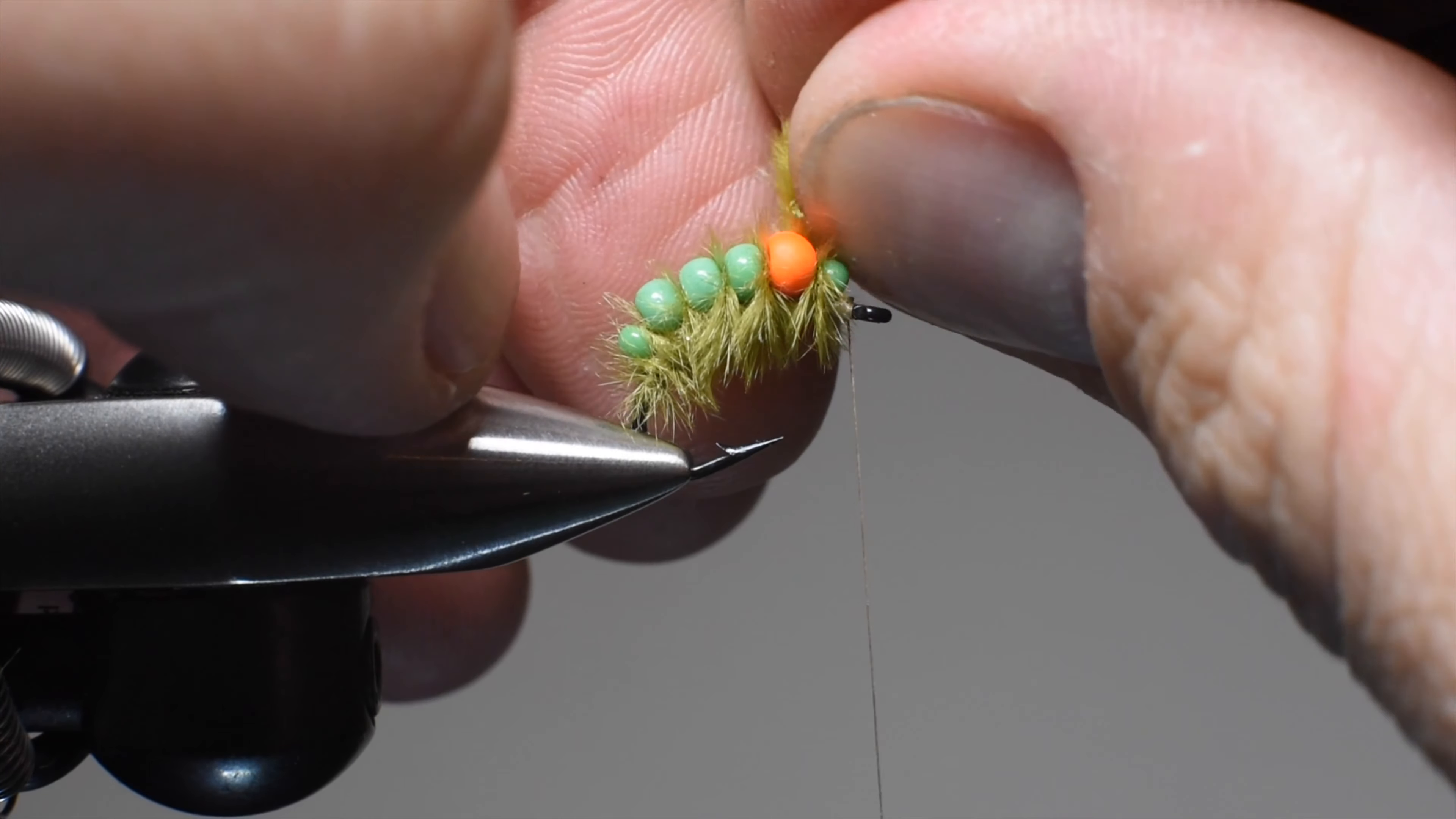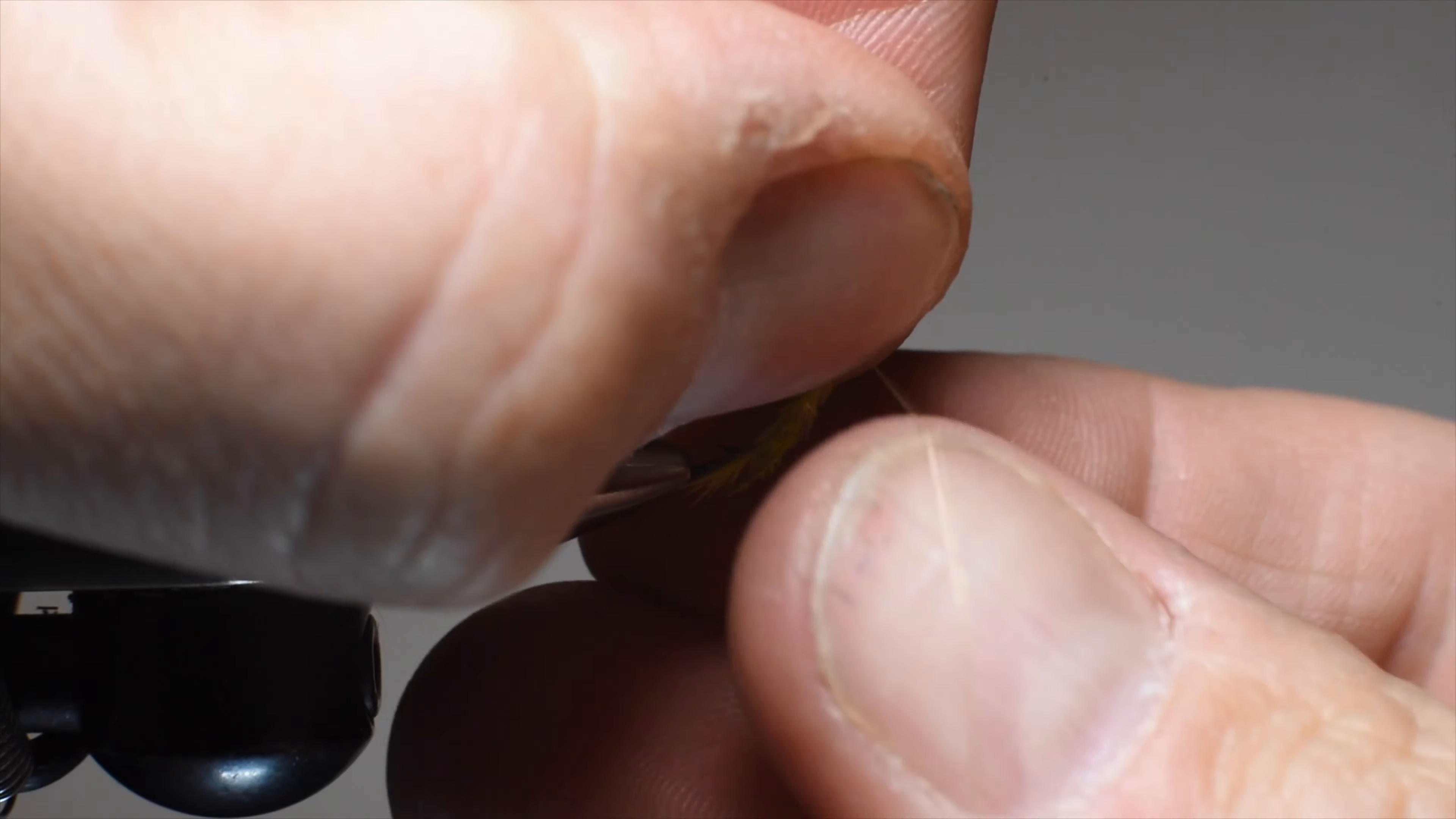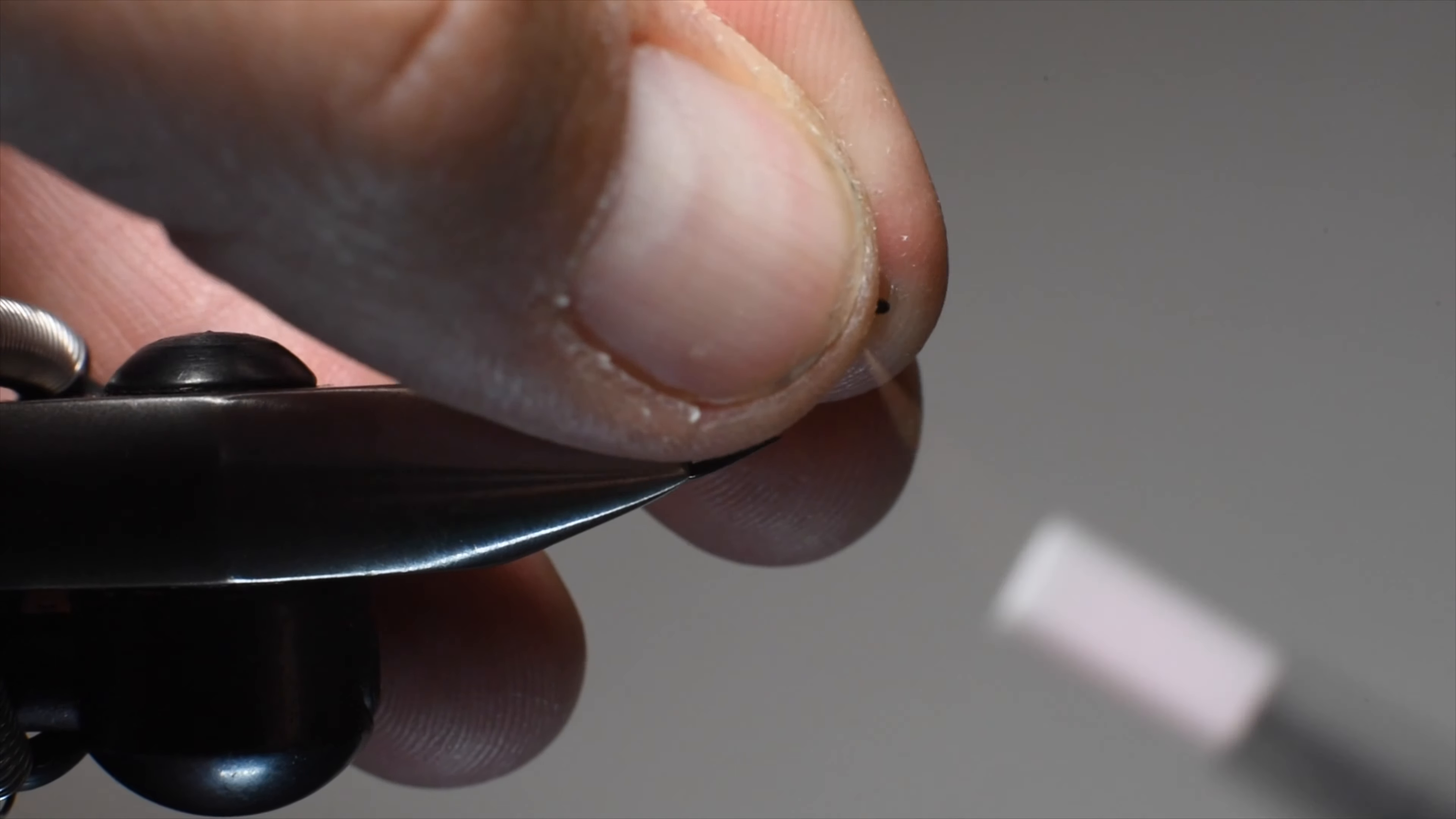You can do two or three wraps through each of these on the main body, right underneath the straight part of the shank. Then you're going to start running out of material, and this is why we use three. Otherwise we would have run out halfway through.